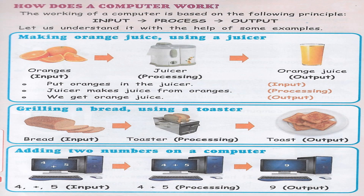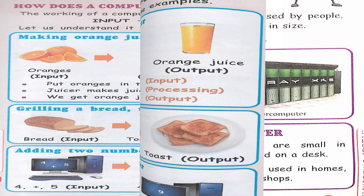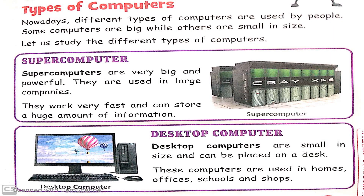A computer takes instructions from us and gives the result after processing them. And then we saw about the working of a computer — it works on input, process, and output principle. And today we are going to see about the types of computers.